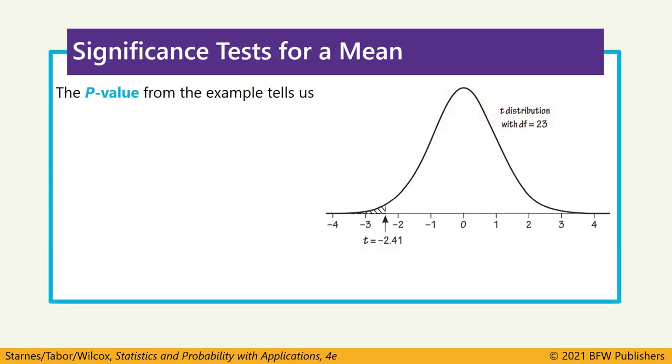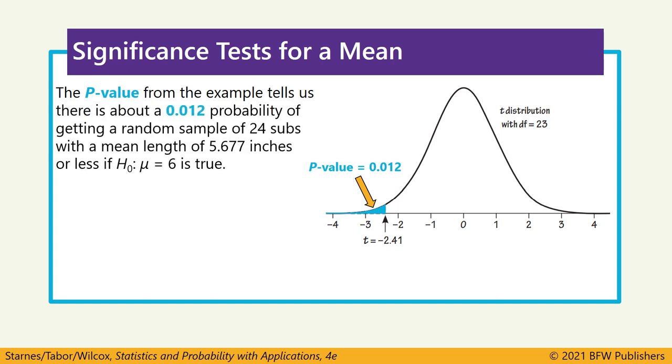So let's talk about what a p-value actually tells us. Now, on this slide, it's going to use a p-value that was calculated from technology. So instead of having a range of 0.01 to 0.025, it's calculated it as a more specific 0.012. And that p-value tells us that there's about a 0.012 or 1.2% probability of getting a random sample of 24 subs that have an average of 5.677 inches if the null hypothesis is true. And that's a key part. So in a distribution where this restaurant chain is telling the truth, their subs actually do average 6 inches, this result will happen that often, a p-value often.